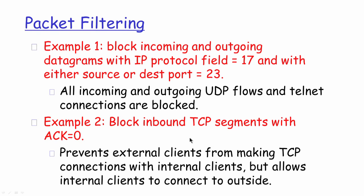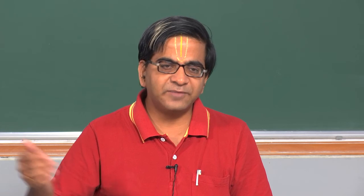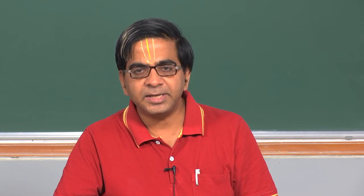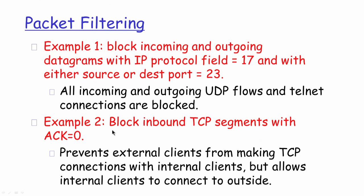Outbound and inbound TCP segments are always defined with respect to the direction of traffic from the firewall device. Traffic coming from the internet into the intranet is referred to as inbound; traffic going from the local network to the external internet is referred to as outbound. So this filter configuration blocks all incoming TCP connection requests to any machine in the internal network, but allows any outbound connection going out from internal machines to anywhere on the internet.